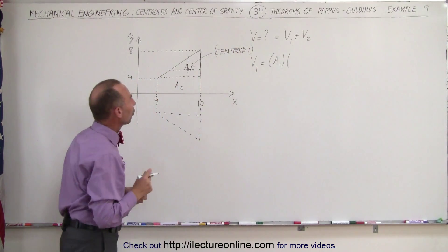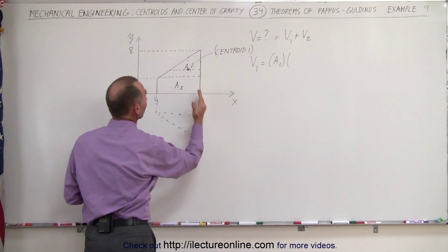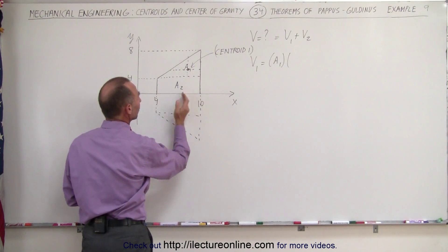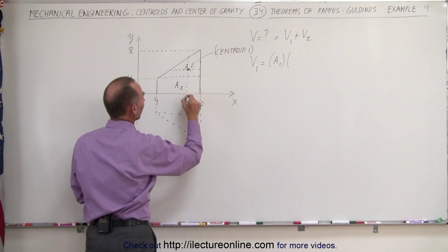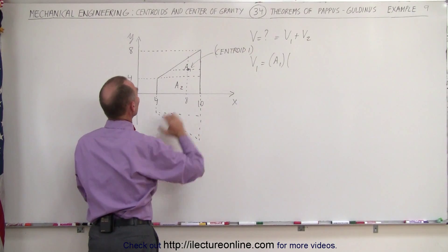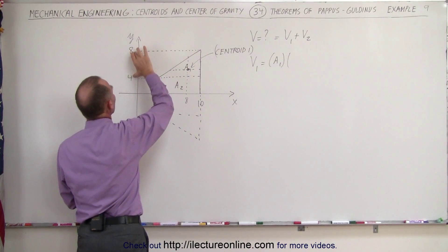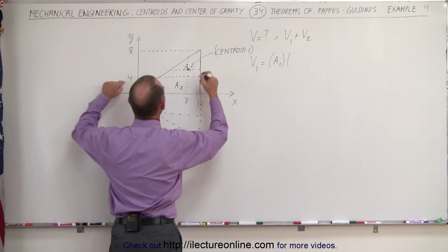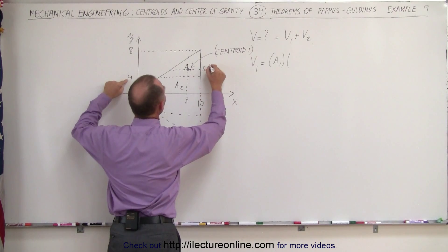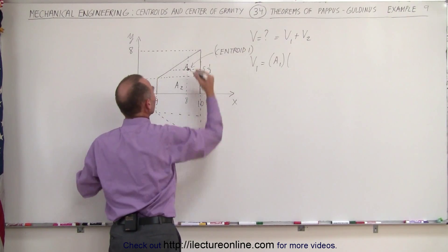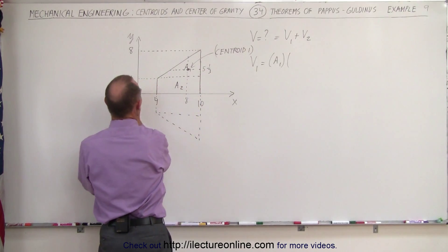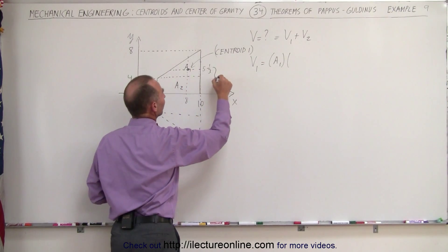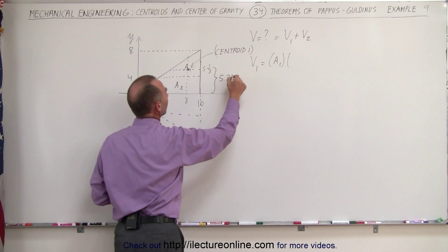And to find the coordinates of centroid 1, it would be one-third the distance from 10 to 4, since the difference here is 6. One-third the distance would be two units from there to there, that would be at a distance 8. And here we have 4 to 8, the difference here is 4, so one-third the distance from 4 to 8 would be one and a third. That would be 5 and one-third in the vertical direction, and 8 away from this point in the horizontal direction. So that's the location of the centroid, which means this distance here is 5.33.